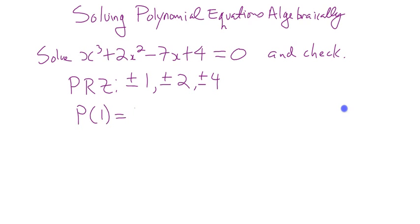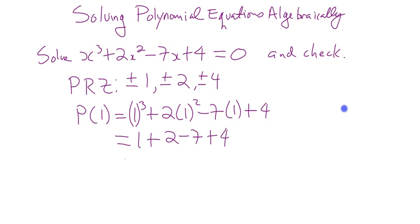So, this is an important step. You have to show P of 1 is equal to 1 cubed plus 2 times 1 squared minus 7 times 1 plus 4, which is equal to 1 plus 2 minus 7 plus 4, which is equal to 0. Okay.